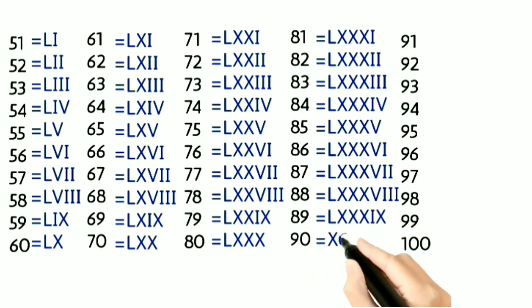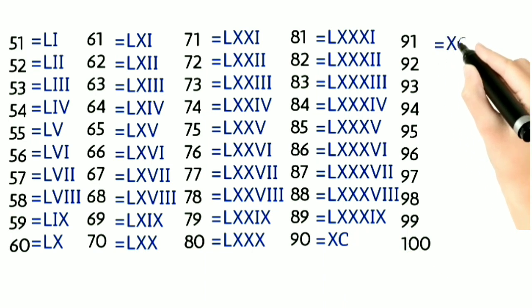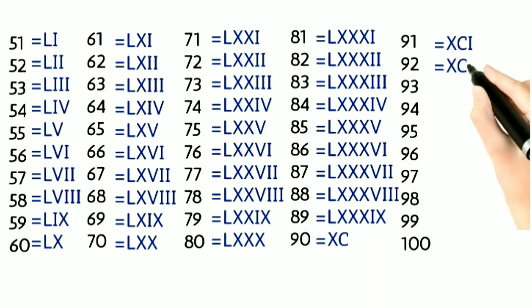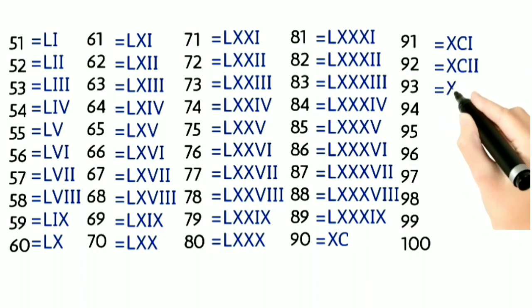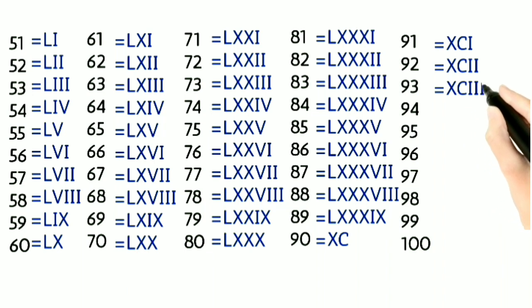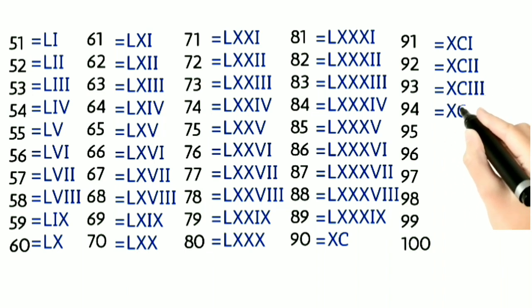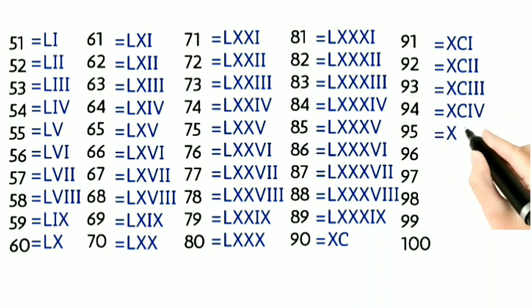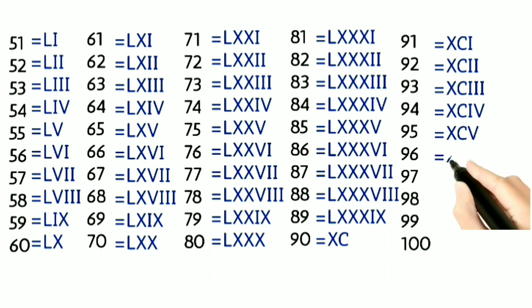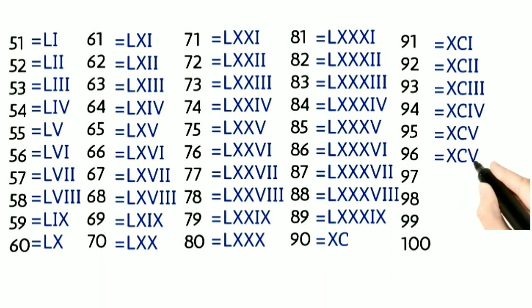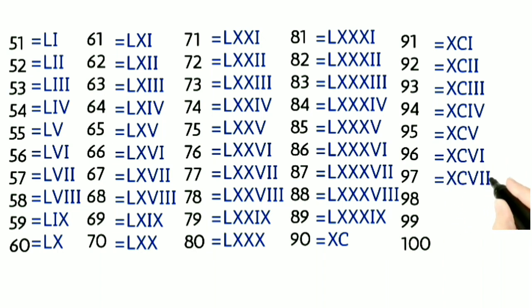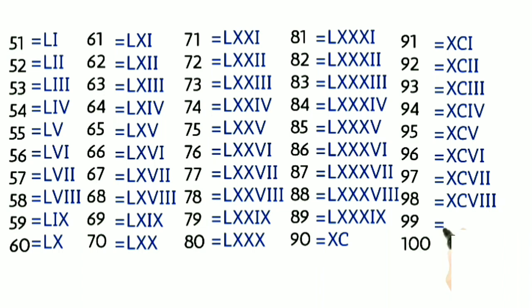90 as XC, 91 as XCI, 92 as XCII, 93 as XCIII, 94 as XCIV, 95 as XCV, 96 as XCVI, 97 as XCVII, 98 as XCVIII, 99 as XCIX, and 100 as C.